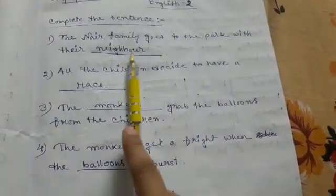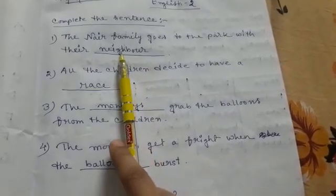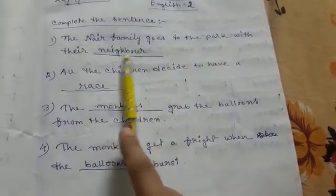The Nair family goes to the park with their dash. Answer is neighbor. The Nair family goes to the park with their neighbor.